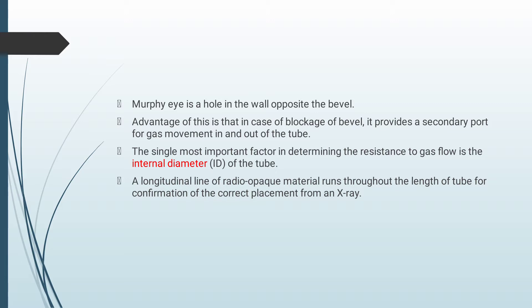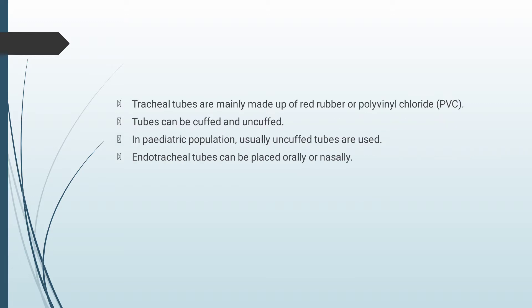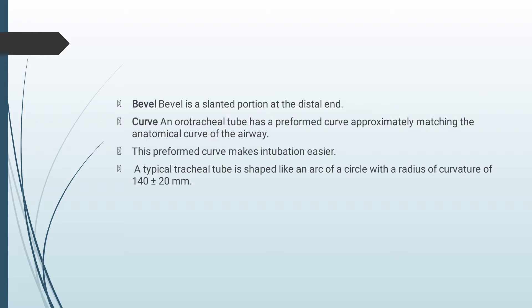Murphy's eye is a hole in the wall opposite the bevel. In case of blockage of the bevel end, it provides a secondary port for gas movement in and out of the tube. The single most important factor in determining resistance to gas flow is the internal diameter of the tube. A longitudinal line of radiopaque material runs through the length of the tube for confirmation of correct placement on X-ray. Tracheal tubes are mainly made up of red rubber or polyvinyl chloride and can be cuffed or uncuffed. In the pediatric population, usually uncuffed tubes are used. Endotracheal tubes can be placed orally or nasally. The bevel is a slanted portion at the distal end. An orotracheal tube has a preformed curve approximately matching the anatomical curve of the airway, making intubation easier.